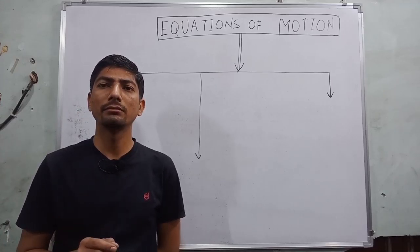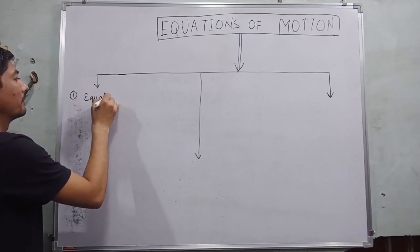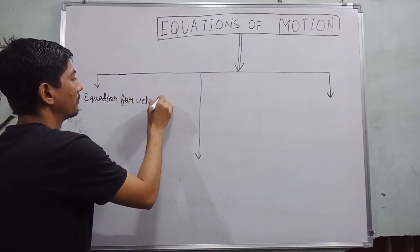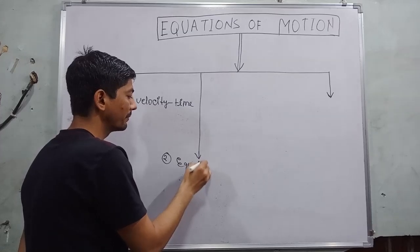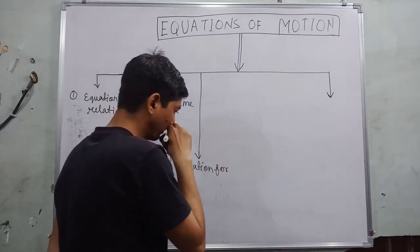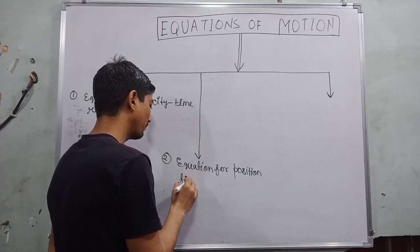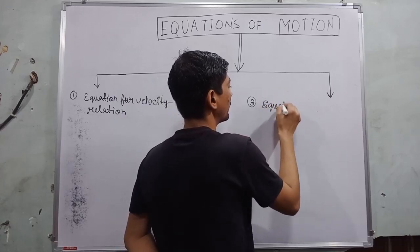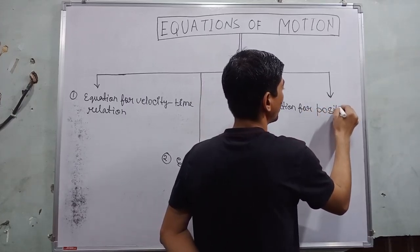There are three types of equations of motion. First one is equation for velocity-time relation, second one is equation for position-time relation, and third one is equation for position-velocity relation.